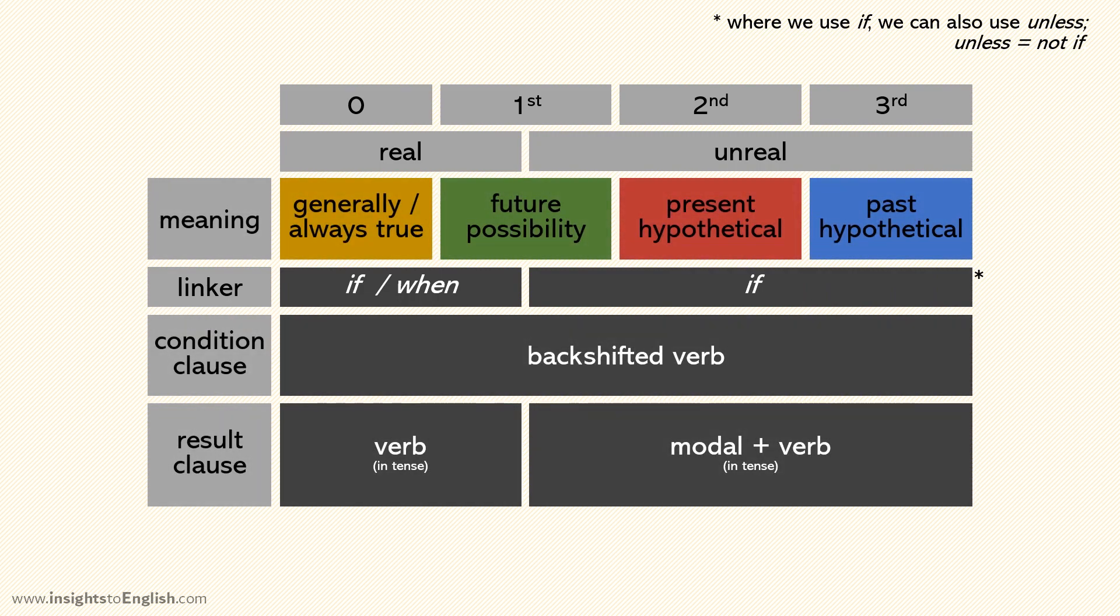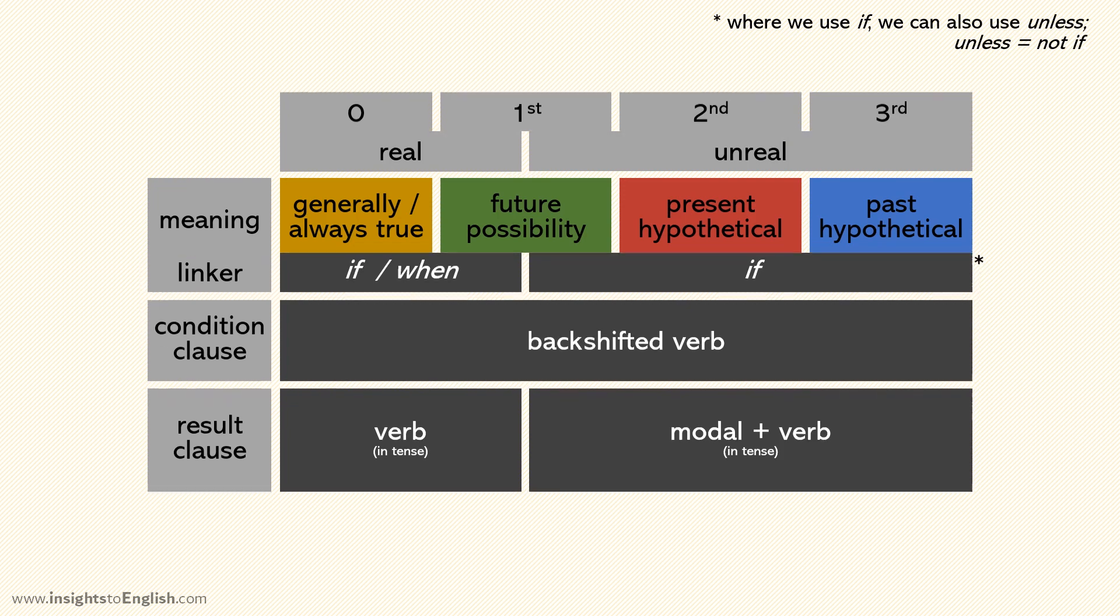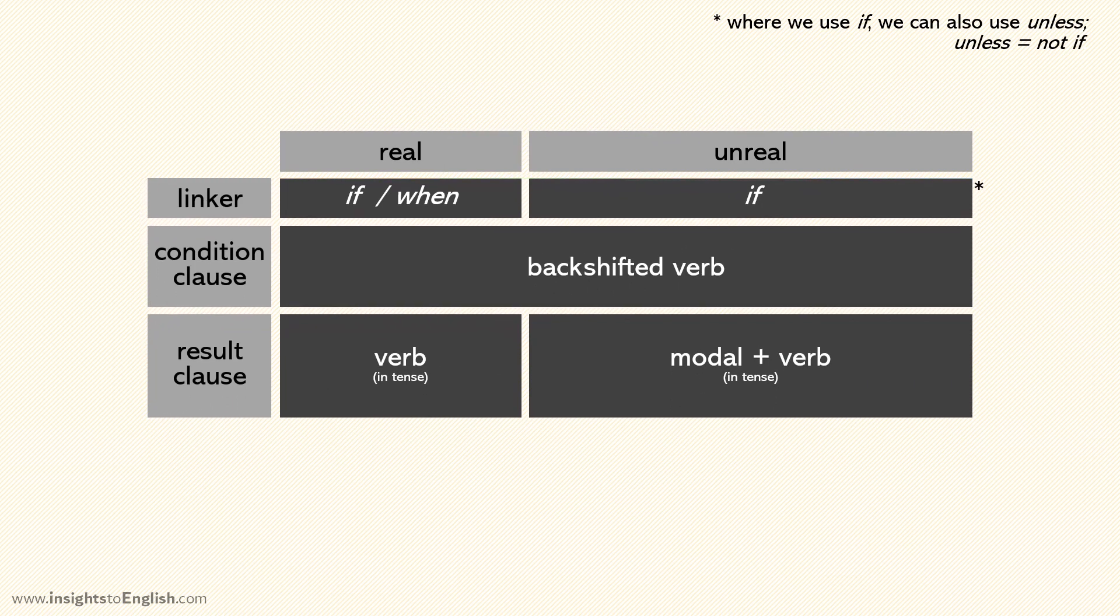The table's a lot simpler now. Yeah. In fact, we don't even need to know whether it's zero, first, second, or third conditional anymore. We just need to pay attention to the tenses, and know if the situation is real or unreal. That's it?